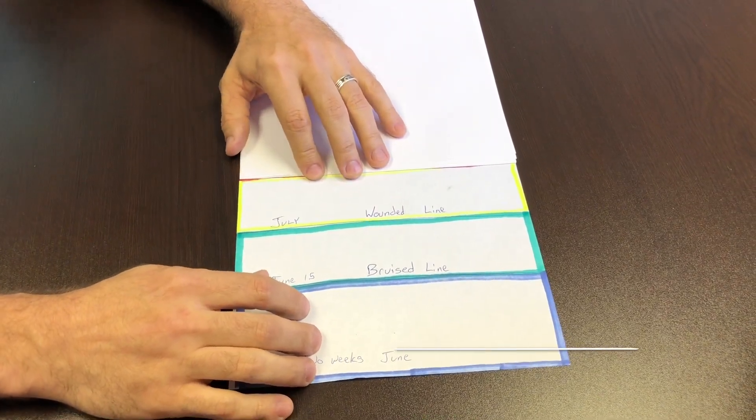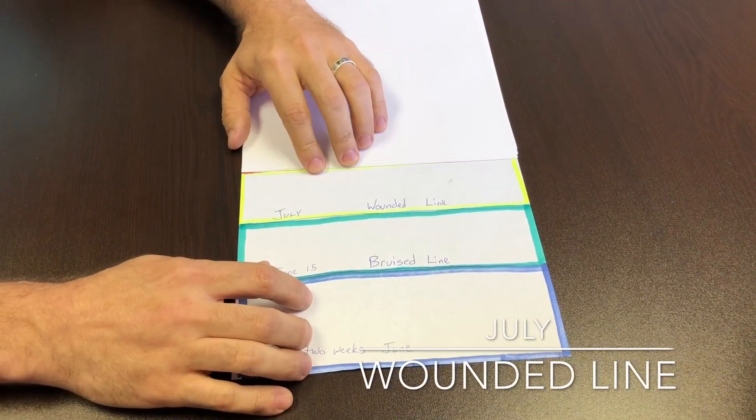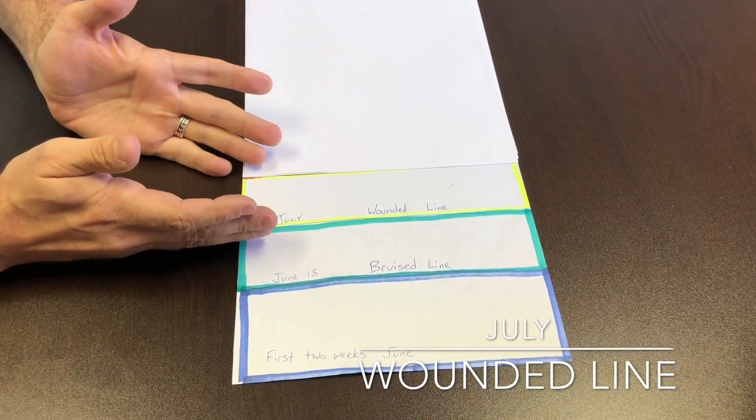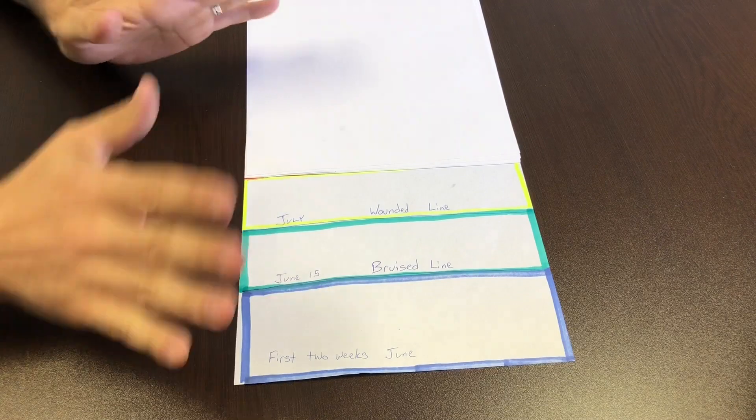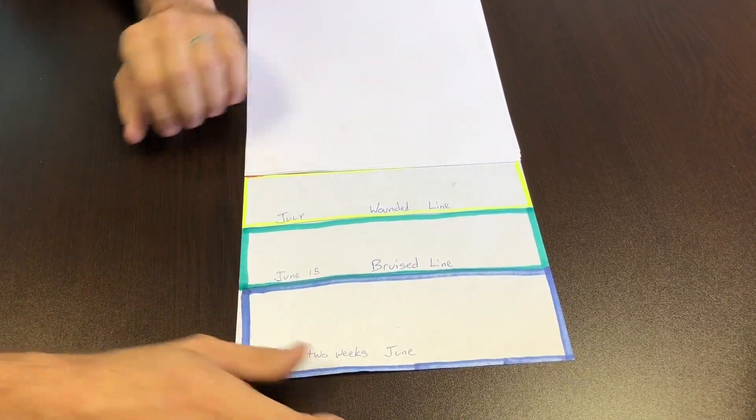Beyond that is what we might dub the wounded line. So July 1st would be the wounded line. You can still get into medical school if you apply this late, but you have hurt your chances by doing so. So you would only want to do that if you have to wait for an MCAT score to come in or something like that.